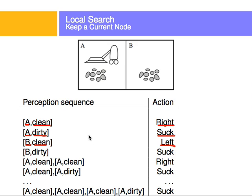Sometimes intelligent agents perceive things in the environment several times before they can take an action. For example, an agent might move to room A, perceive on second one that it was clean and be ready to go to room B, but then somebody dropped a glass and it perceives that room A is dirty. So it perceived room A was clean and immediately after perceived that room A was dirty.